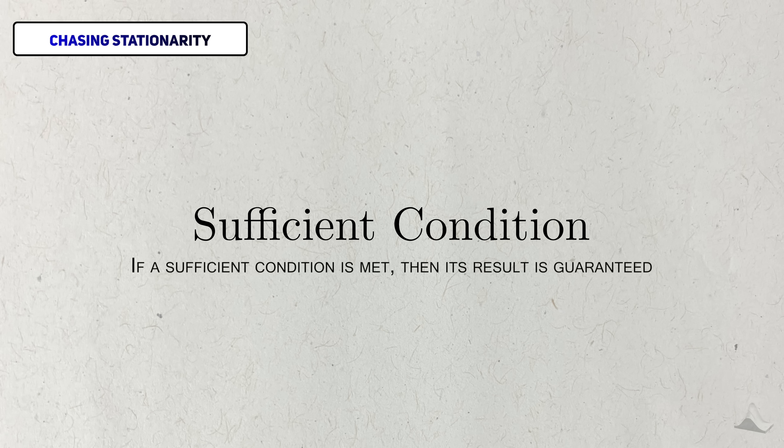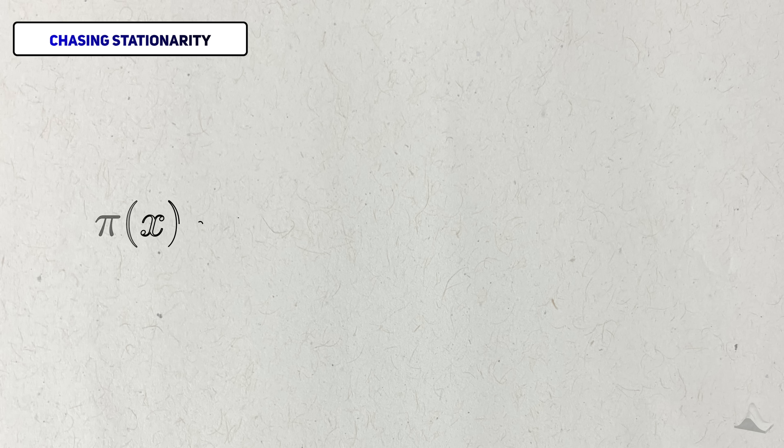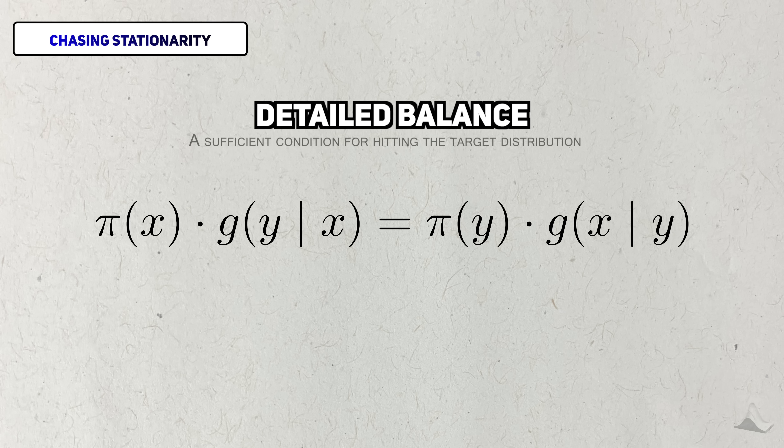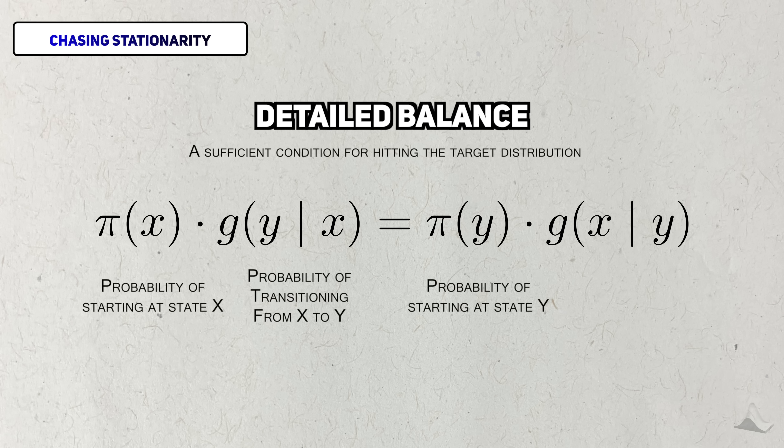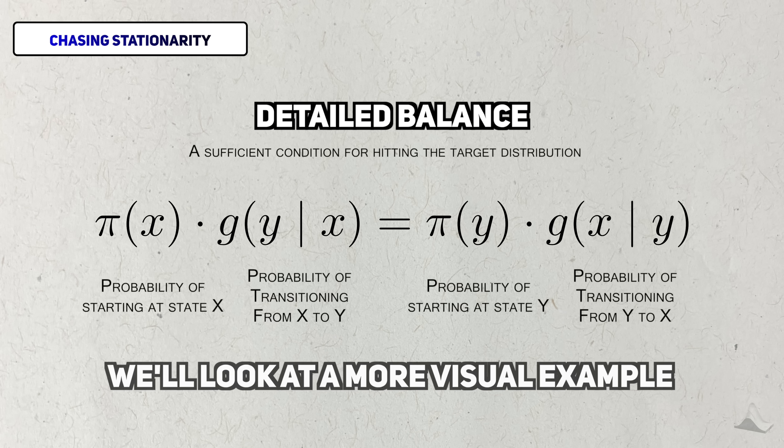A good place to start is our need for a stationary distribution. A sufficient condition to create a stationary distribution is that the transition distribution must satisfy a condition known as detailed balance. Roughly speaking, detailed balance says that for any two states, x and y, the probability of starting at x and going to y is equal to the probability of starting at y and going to x. It's not easy to see what this has to do with creating a stationary distribution, so we'll derive a more visual intuition through my Portland example.